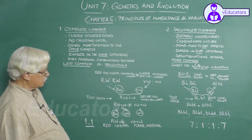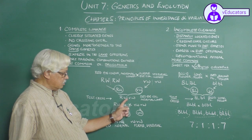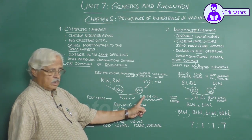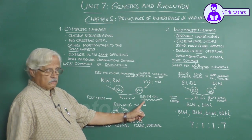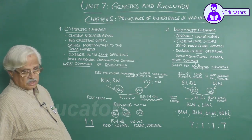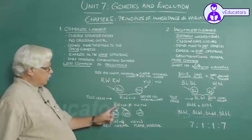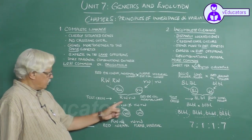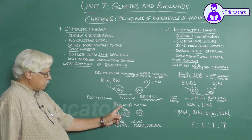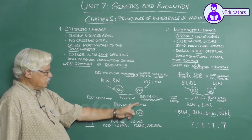This F1 is heterozygous. It has one dominant gene for eye color and one dominant gene for wings, so the phenotype shows red eye color and normal wings. When this genotype is subjected to a test cross with double homozygous recessive (small r small w / small r small w):